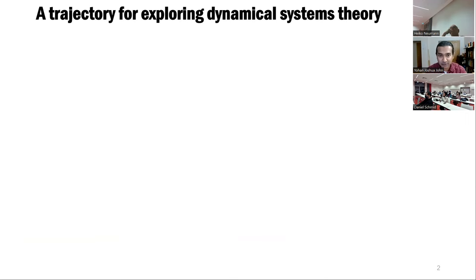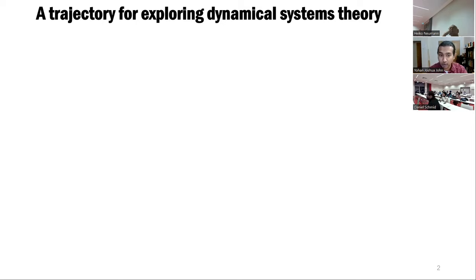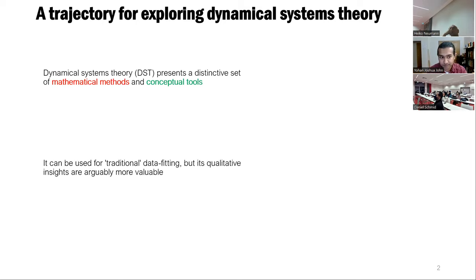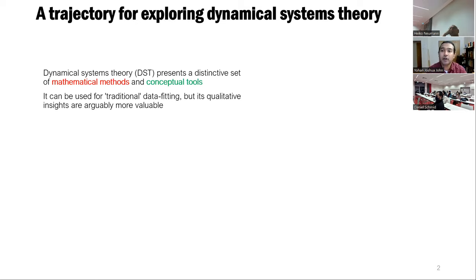My plan for today is to give an overview of what dynamical systems theory is. It's not unique to neuroscience, and there's some terminology that we need to learn, which can be a little bit daunting, but I think it's a very intuitive field. I want to provide mainly some motivation so that you can then dive in on your own if you're interested, and also when you see terminology, you'll know more or less what it means. Dynamical systems theory — DST — presents a distinctive set of mathematical methods and conceptual tools. You can use this for traditional data fitting, neural data like spiking or fMRI data, but arguably the qualitative insights are more valuable.